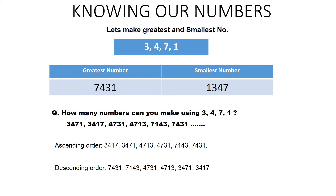When the thousands place digits are the same — both 3 — we look at the hundreds place. At the hundreds place, both are 4, so again the same. Then we look at the tens place: in one number it is 7, and in the other it is 1. So we choose 3417 as the smaller number.